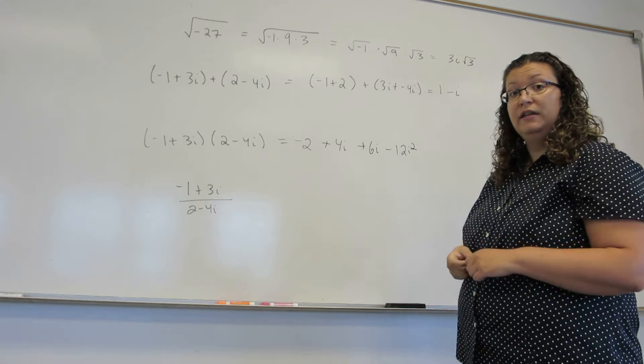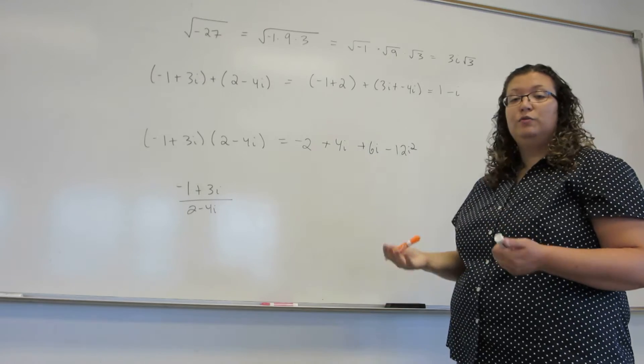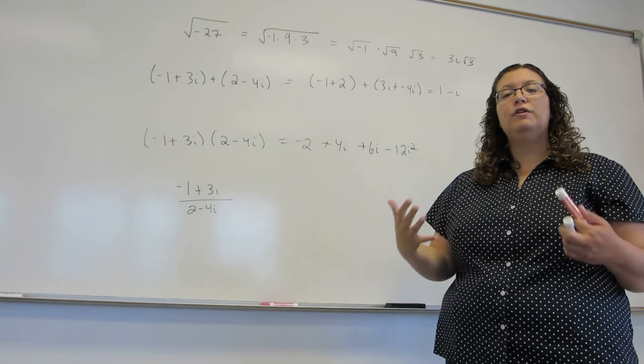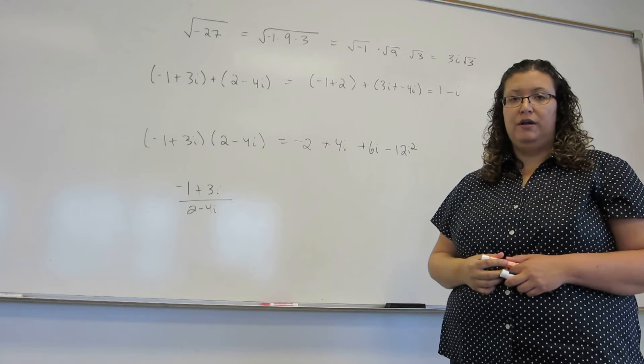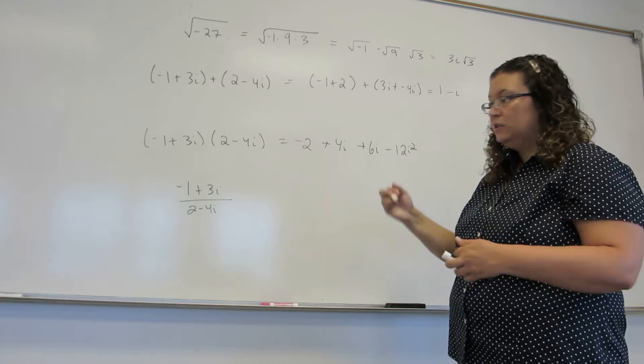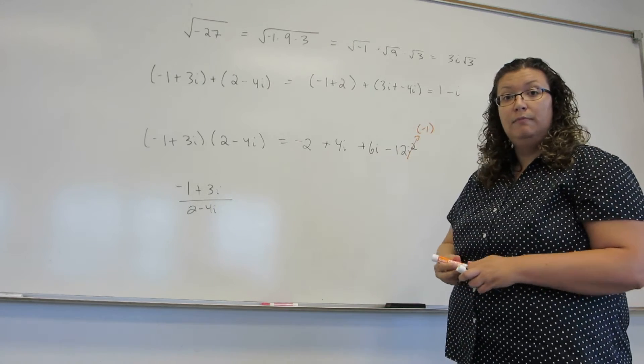Now this is where things get a little bit different. We are still going to combine the parts with i and the parts without i. But the beauty of complex numbers is you should never need to have a power of i appear. Because i squared, well we know what that is. Because i squared is really negative 1 by definition.